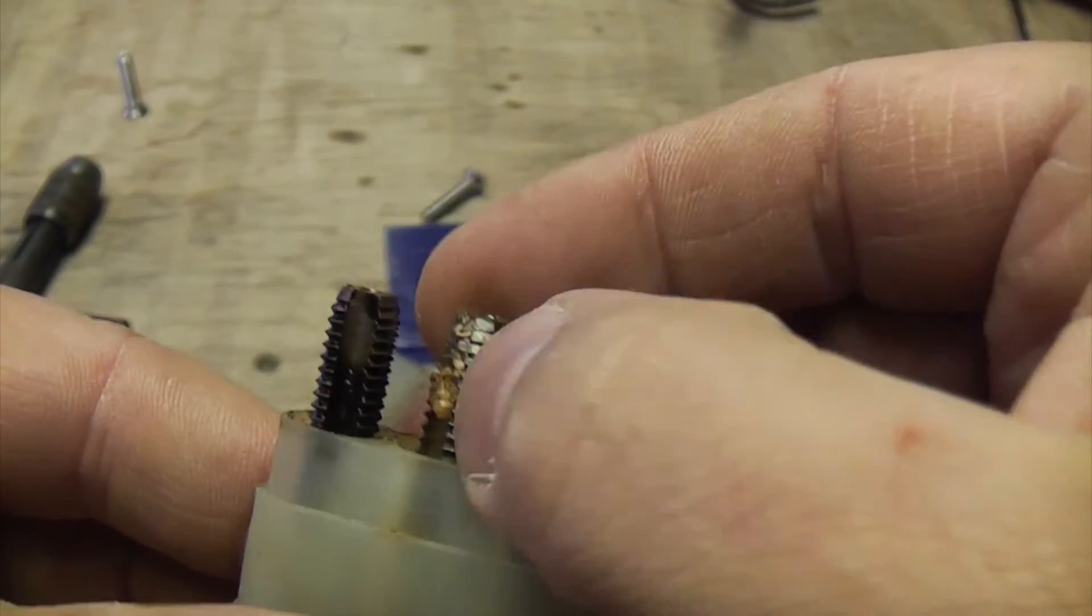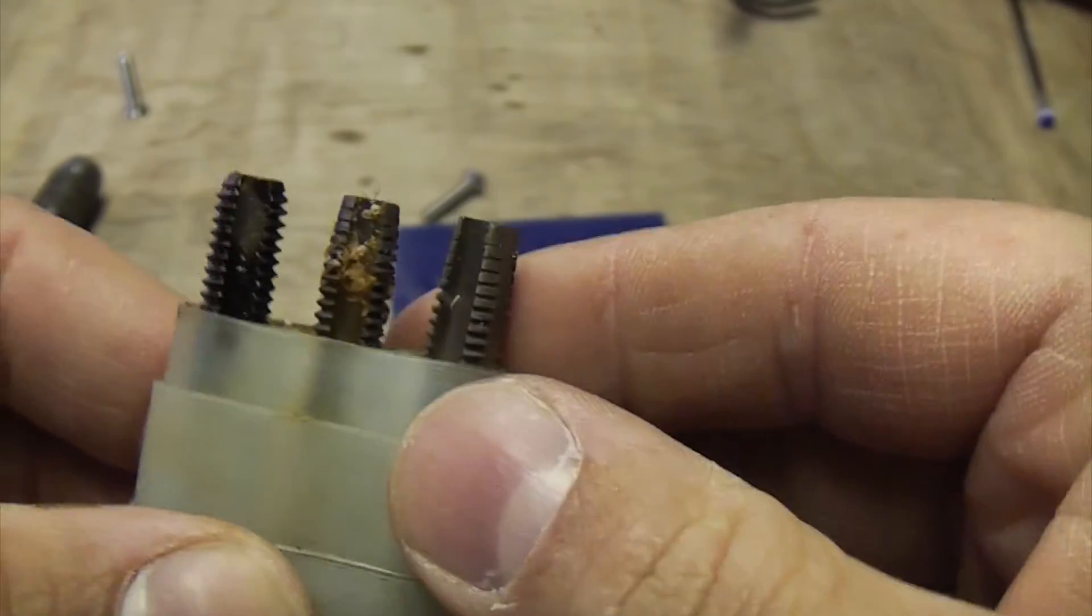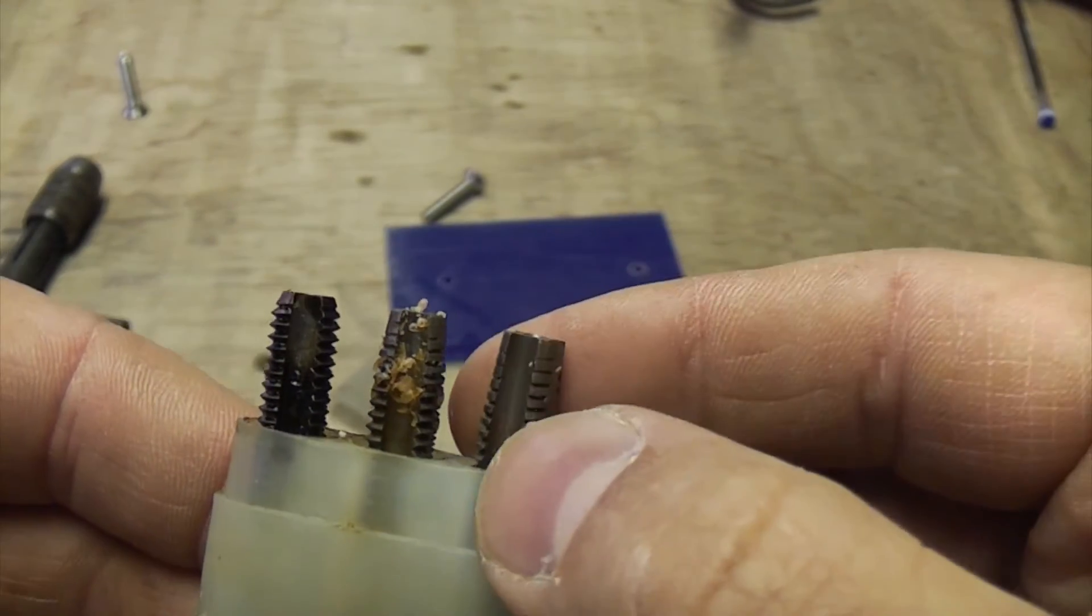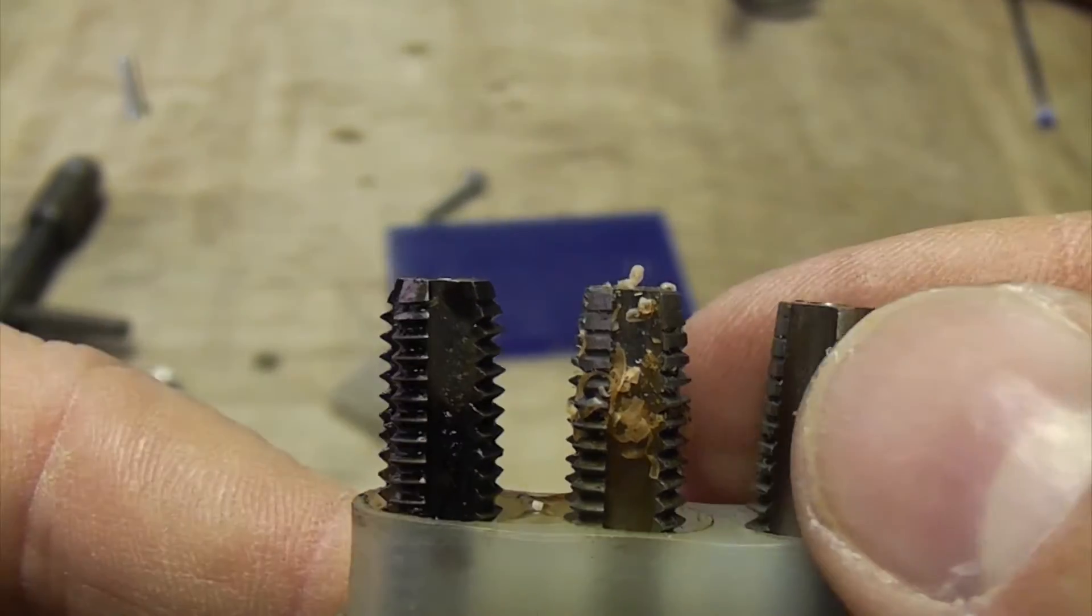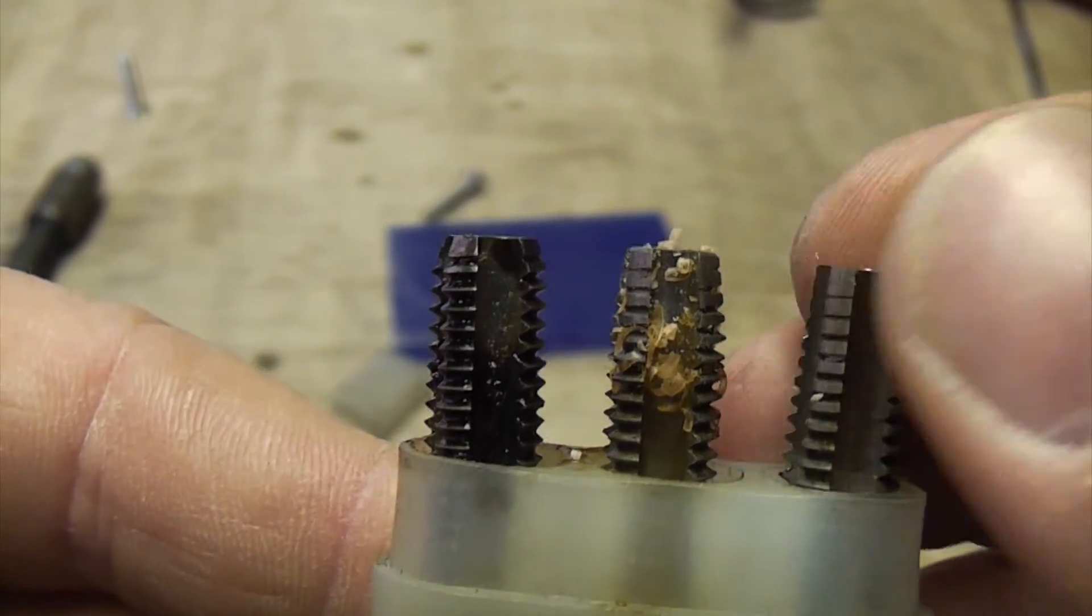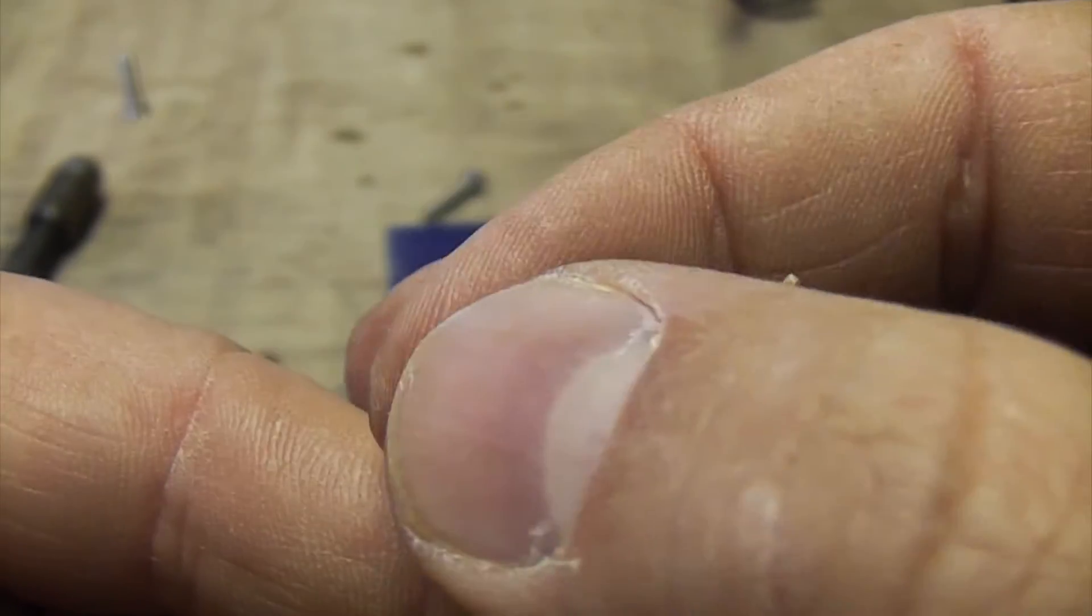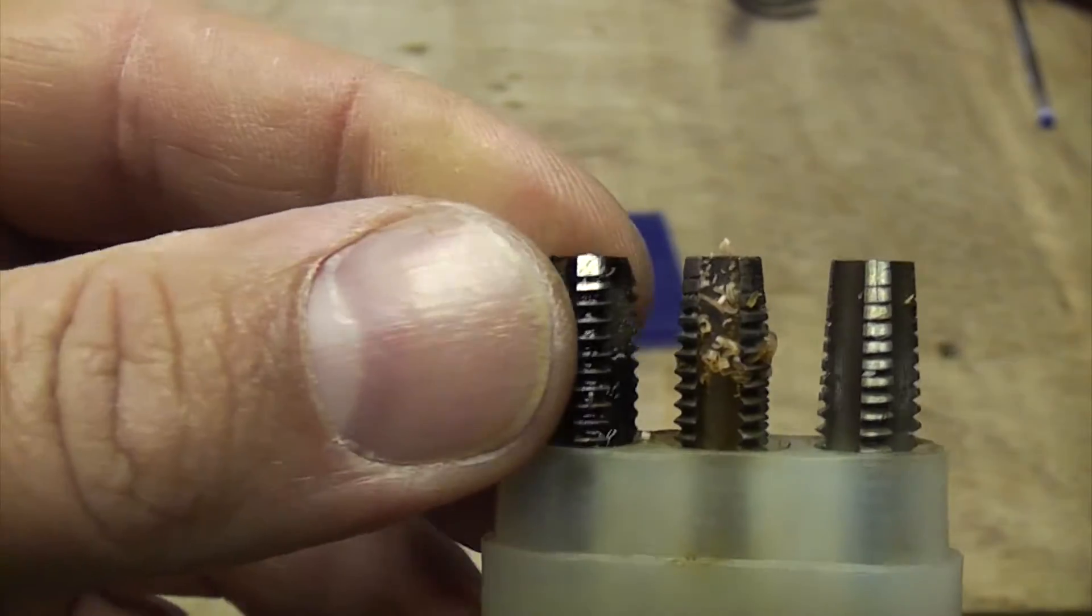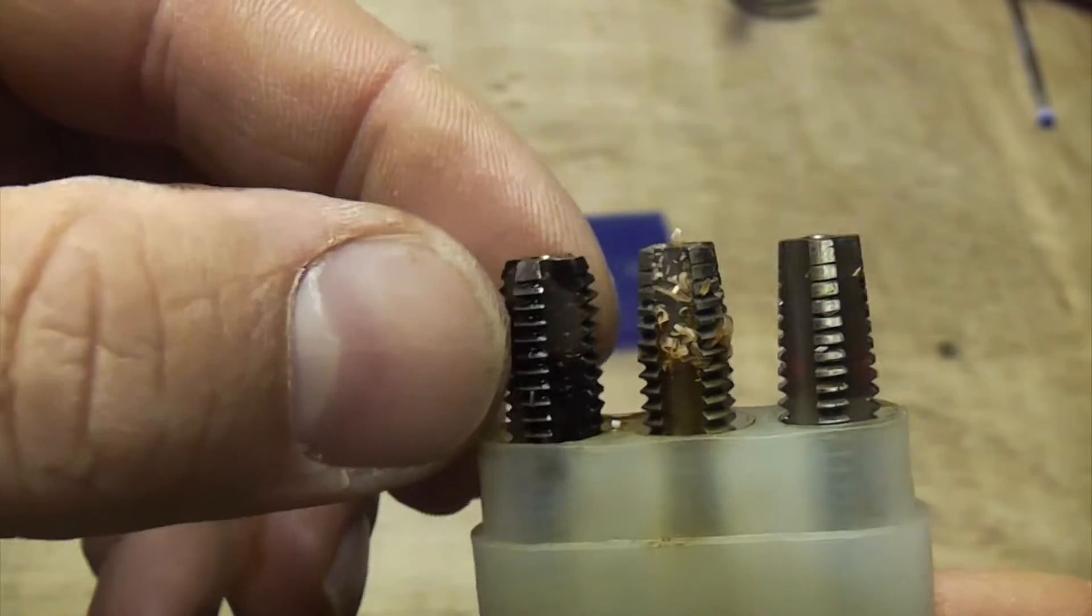These are normally sold in sets of three. You can see that these three are different. If you look at that one, you can see that's the one you'd run down the hole first. That's called a starter, and then that's the intermediate one, and then that one there is the final one. You'd ensure then that your thread went all the way to the end of the hole virtually.